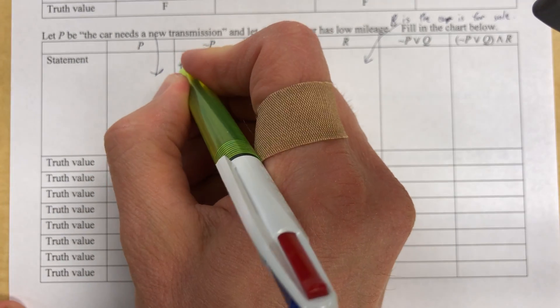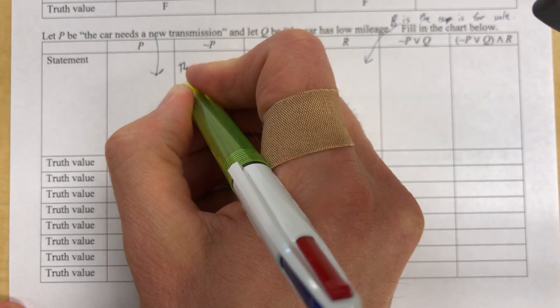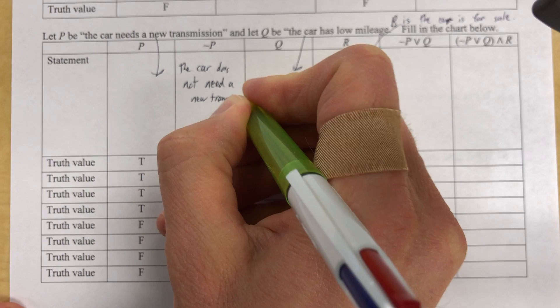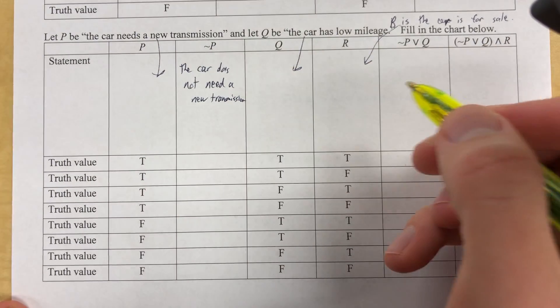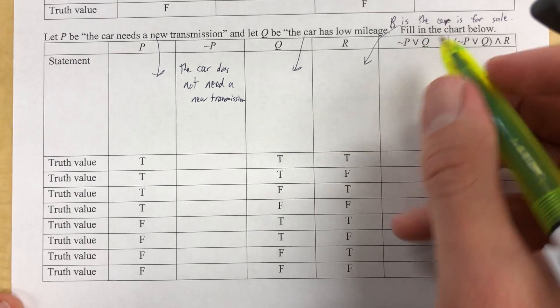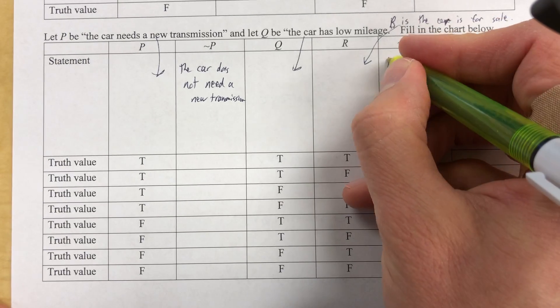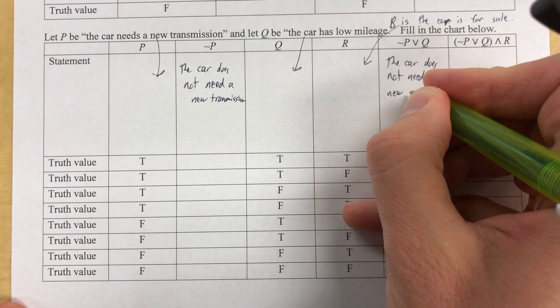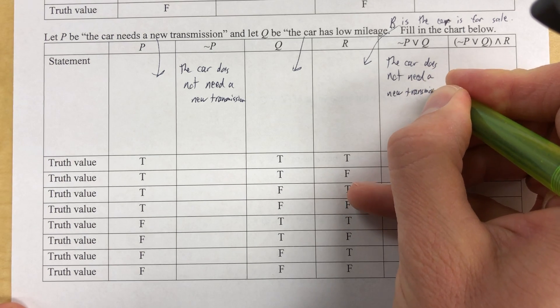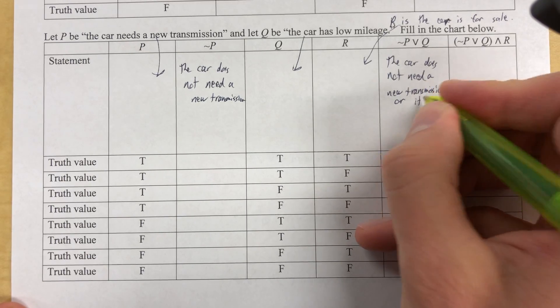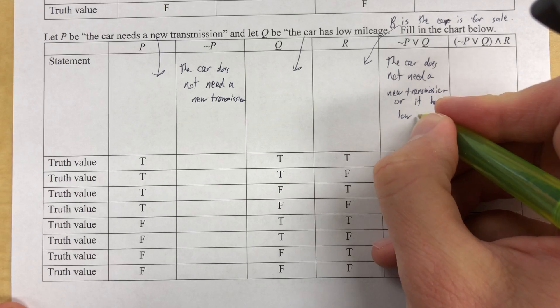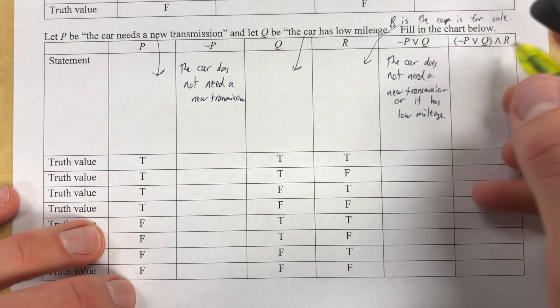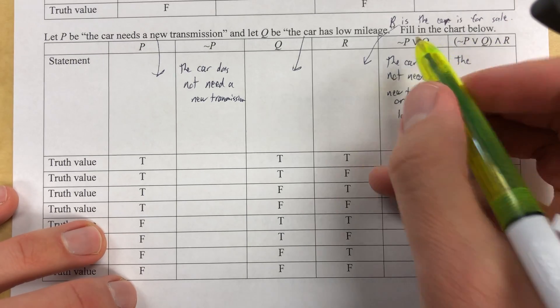And so let's fill in a few things. The car does not need a new transmission. Q is the car has low mileage. Okay. R is the car's for sale. Oh, now we get to this one. Not P or Q. Well, let's write that. The car does not need a new transmission or the car, I'll call it it, it has low mileage. Okay. Now we get to this one. Oh boy. It's getting fun now. The car, this, by the way, this right here is this right here.